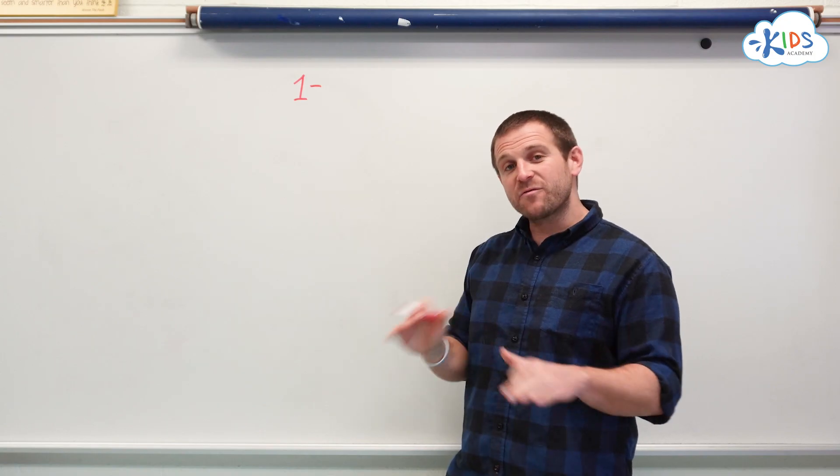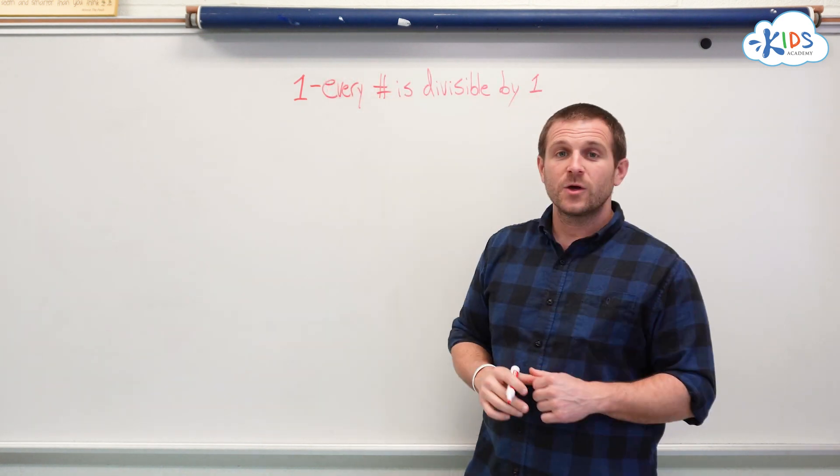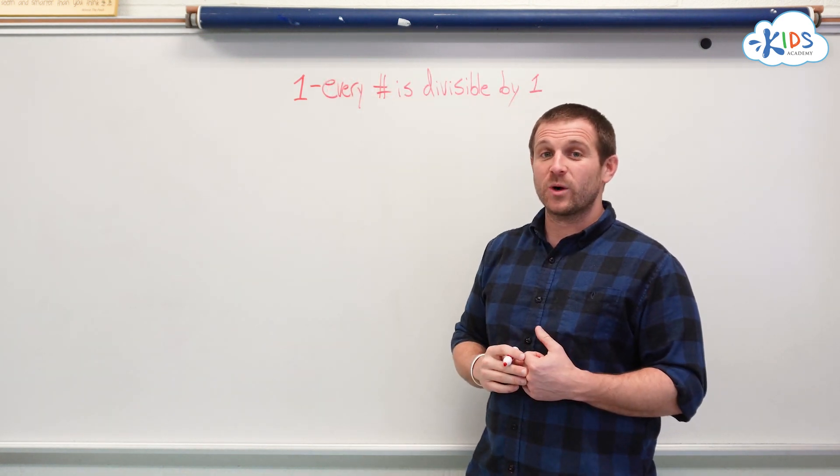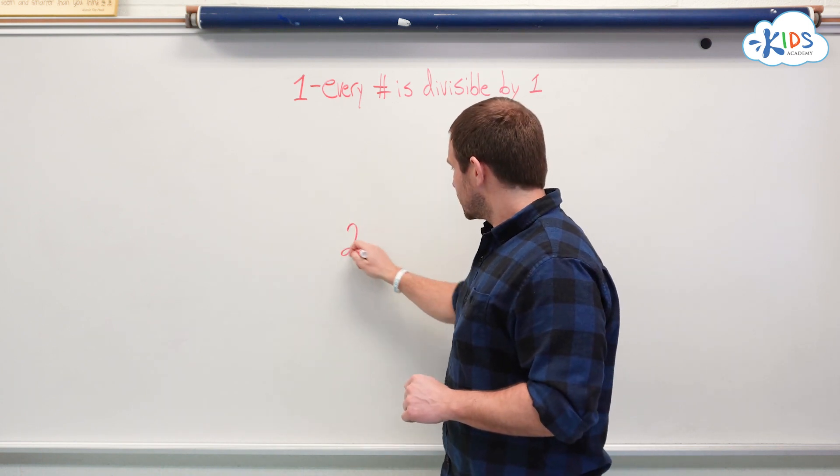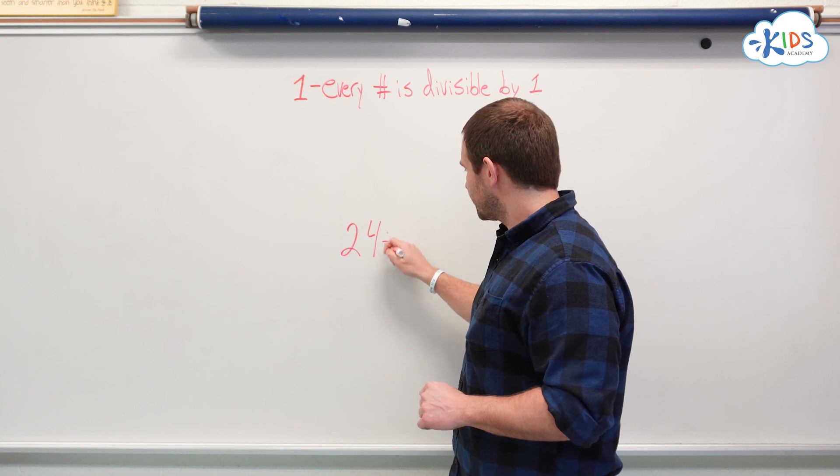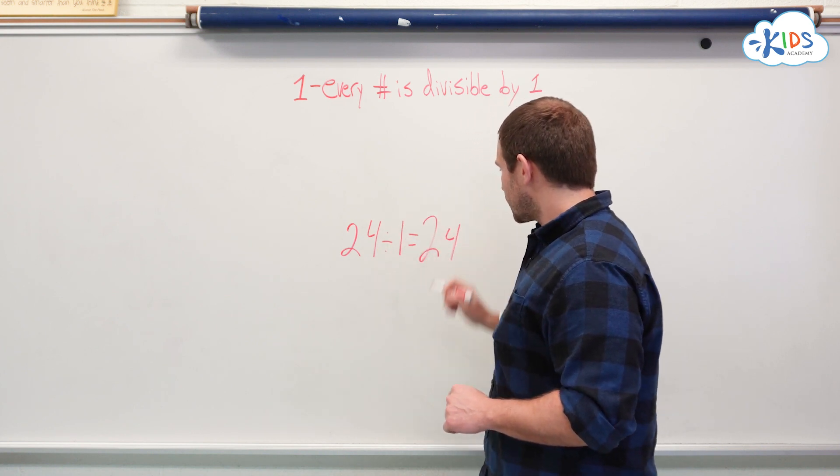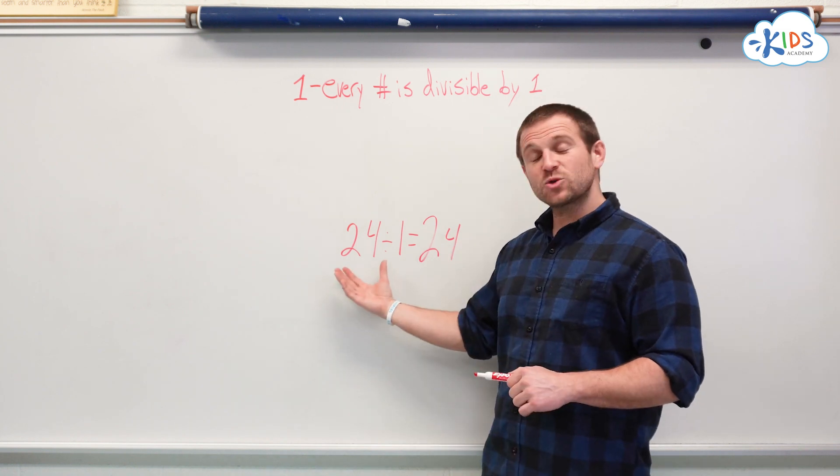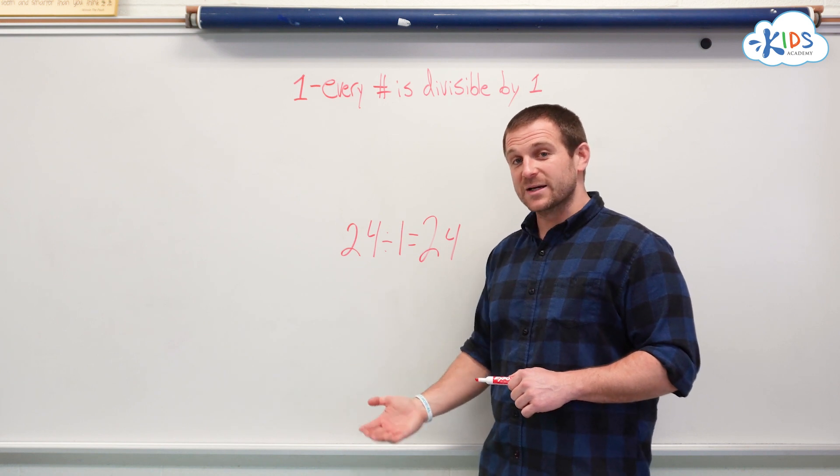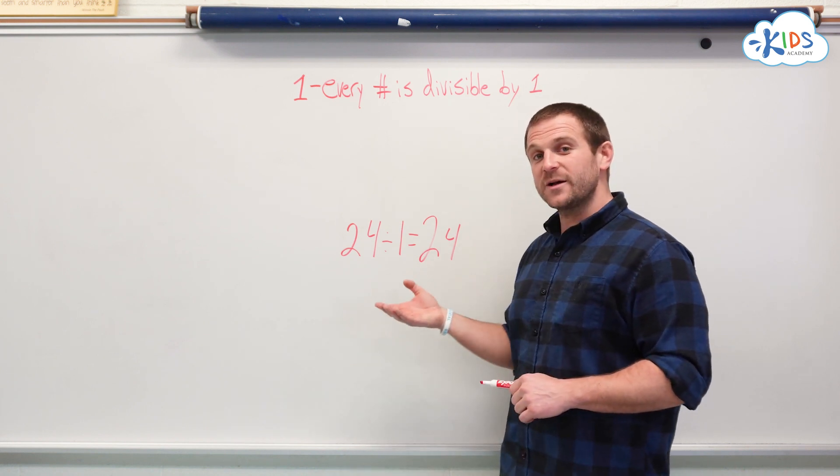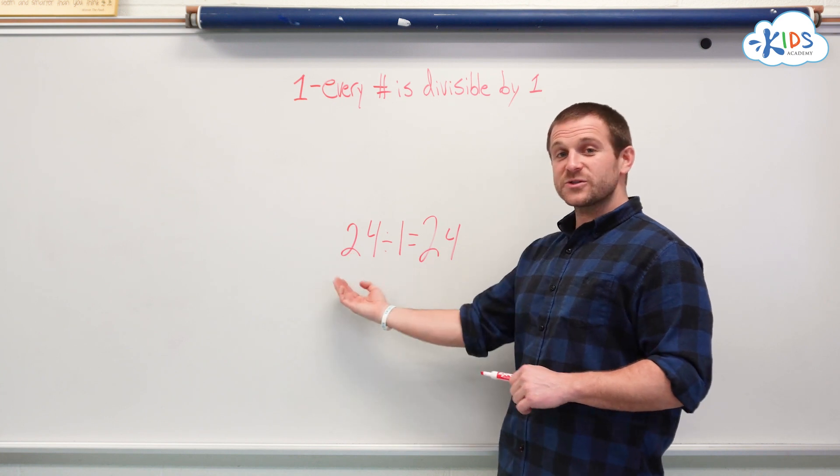One is easy. Every number is divisible by one. When we divide any number by one we get that same number. Let's take 24 for instance. 24 divided by 1 equals 24. Imagine taking 24 objects and putting them into one box. How many objects are in that box? All 24 are in that one box. Any number divided by 1 equals the original number.